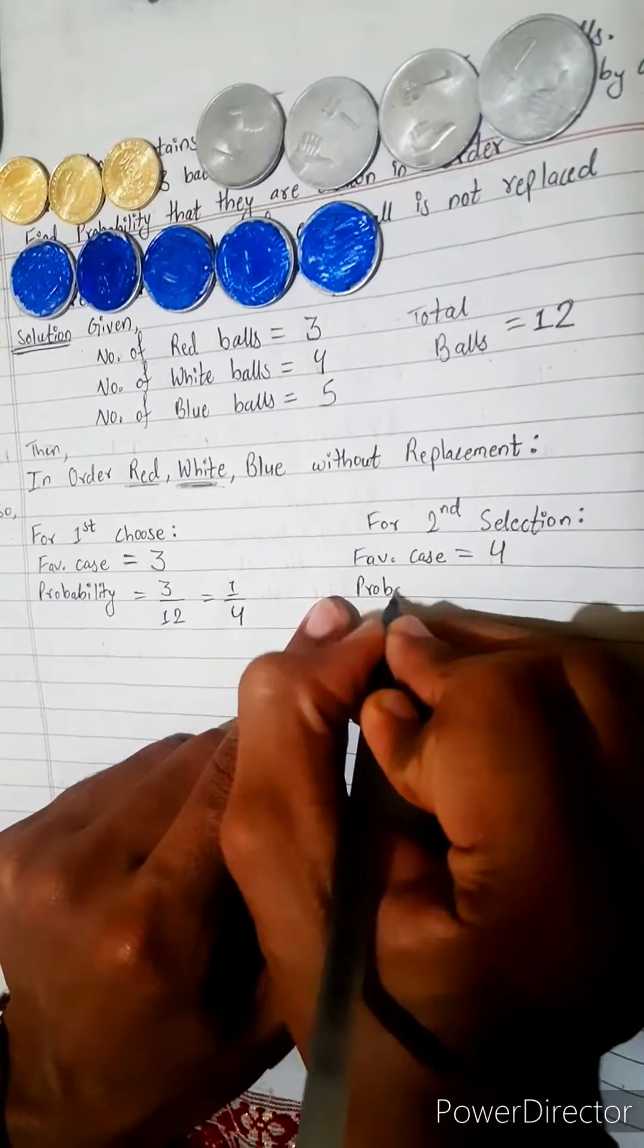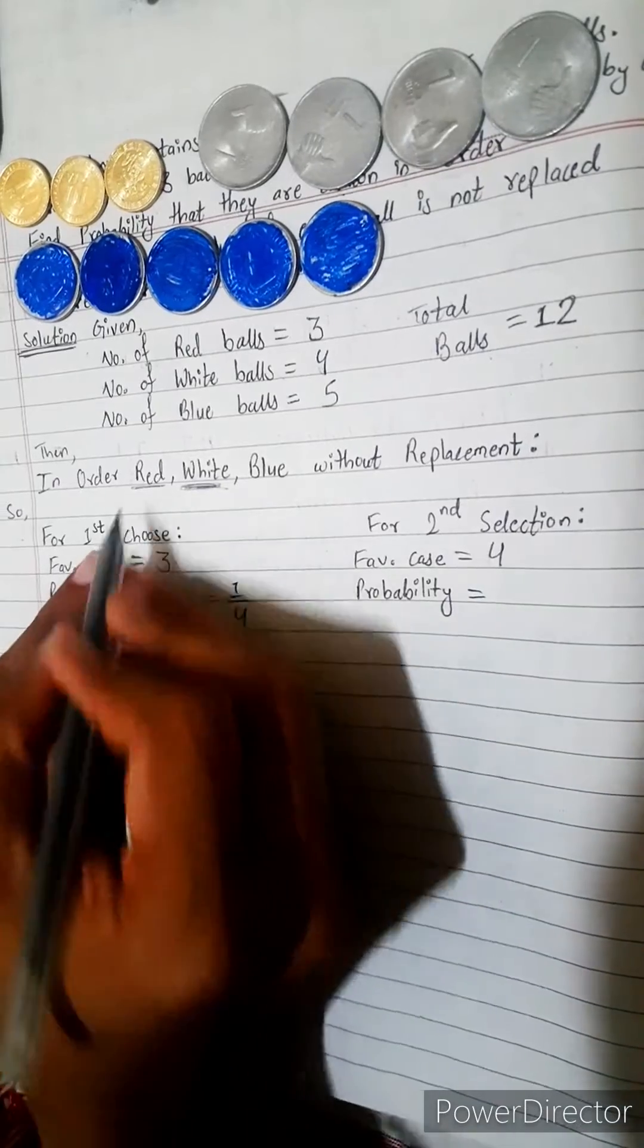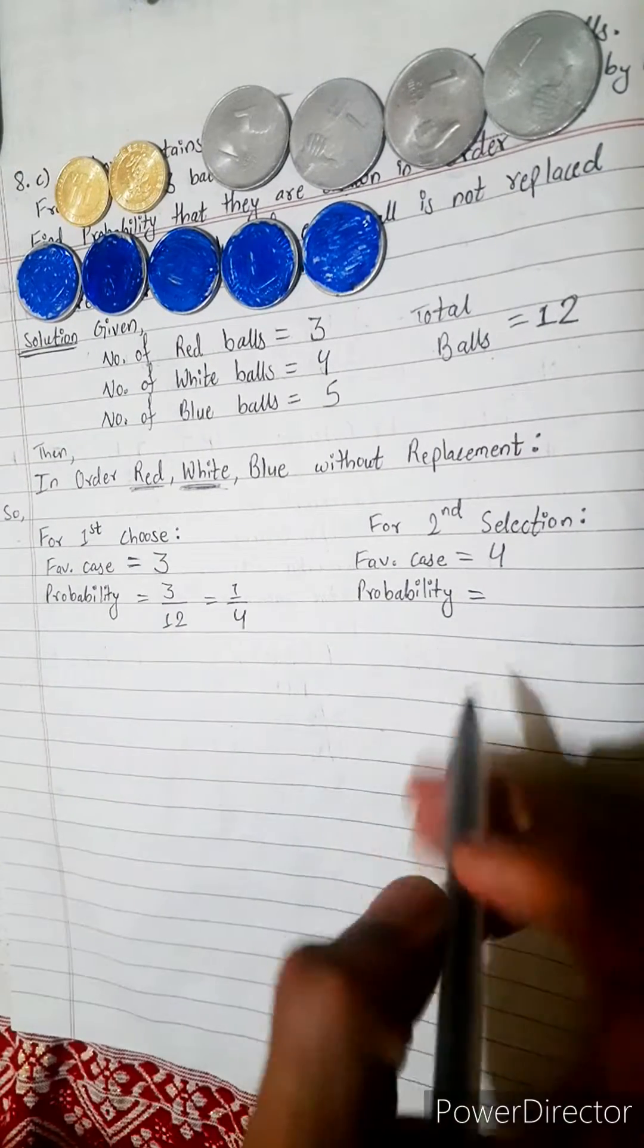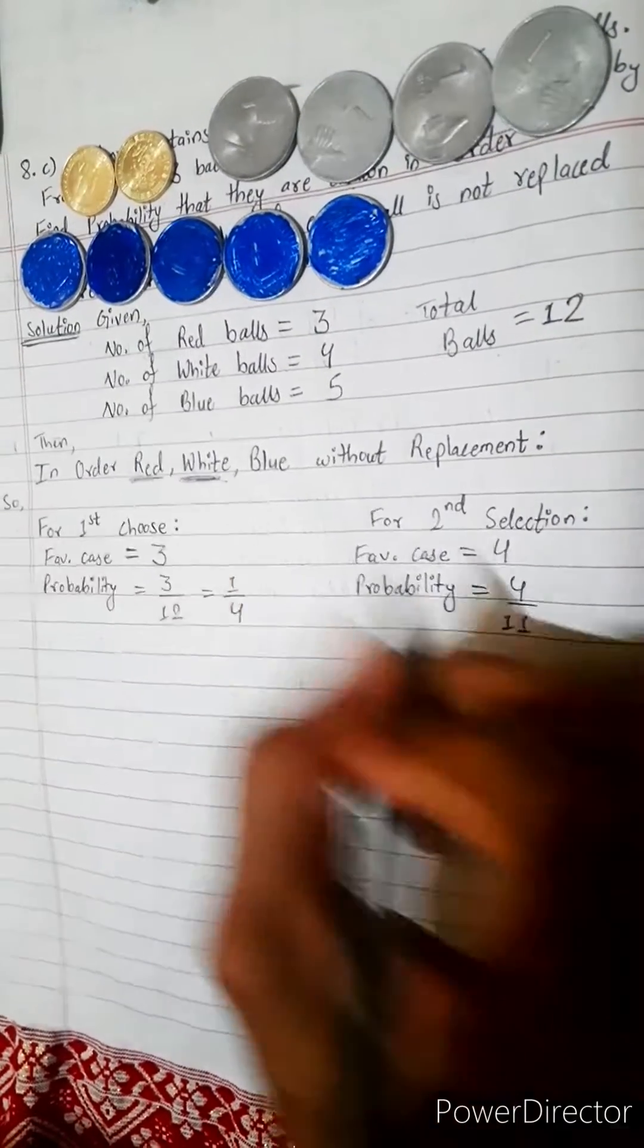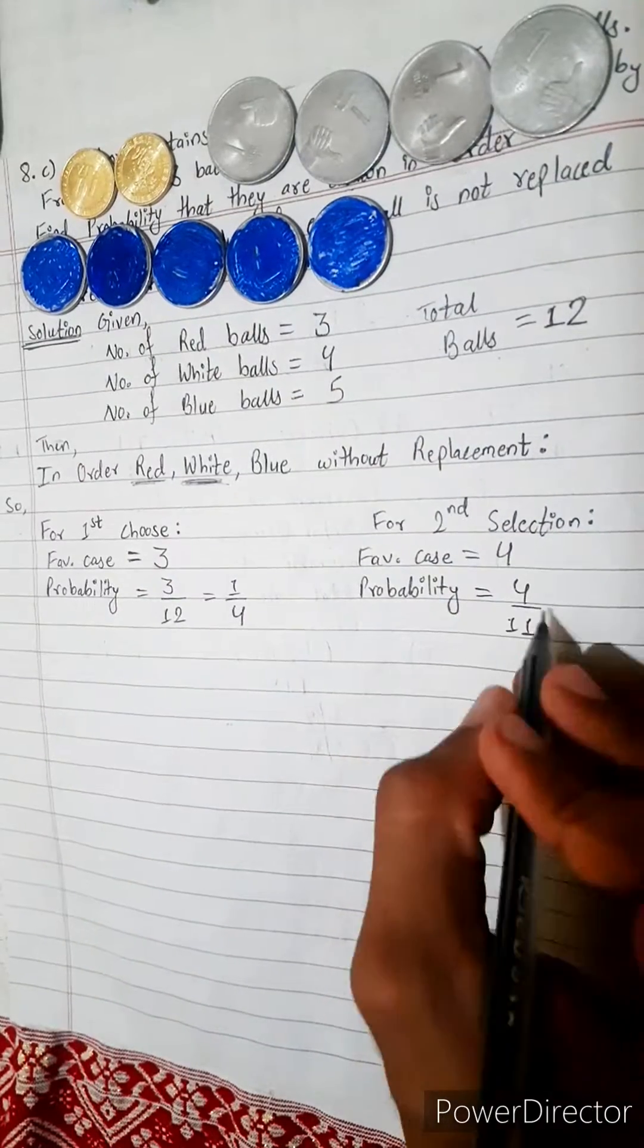What is the probability? Probability equals: 1 red we have already pulled, we have already taken 1 red. It is in our hand. So how many are there total? Favorable case divided by total equals 4 by 11. This is our probability.